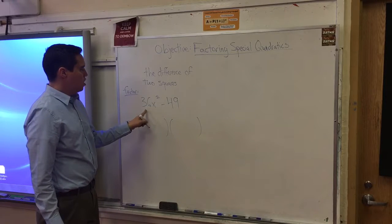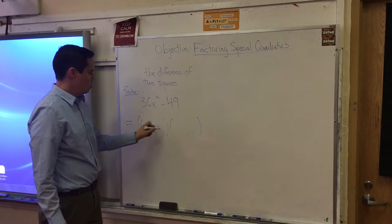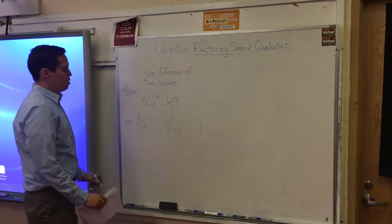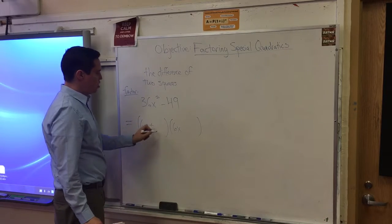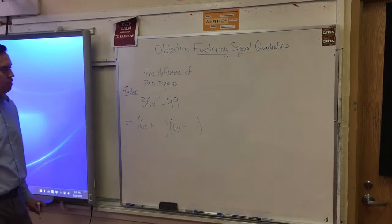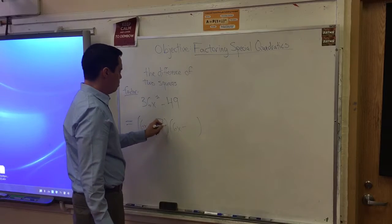What times itself will give us 36x squared? The answer is 6x. So those go in the first positions here. Now we know that from the previous example, that there's a plus and minus here. The last, negative 49. Now that's a perfect square also. It's 7.